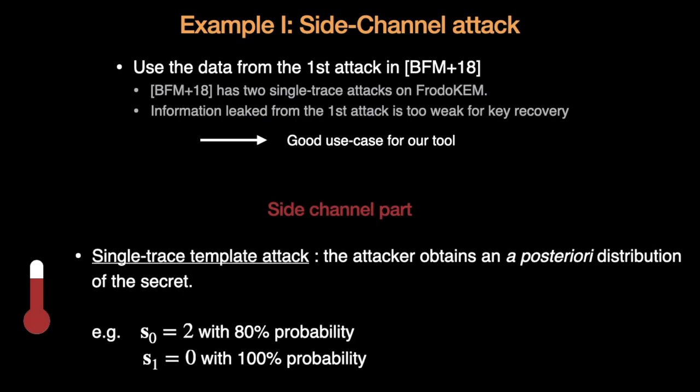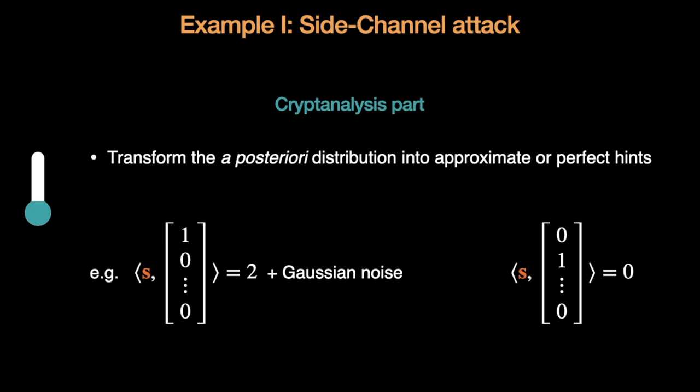The side channel is a single-trace template attack. The attacker obtains an a-posterior distribution of the secret. For example, he recovers S0 equals 2 with 80% probability, and S1 equals 0 with 100% probability, and so on for the other coefficients. Even if the probability is very high, it is very expensive to recover the secret key with brute force. However, this information can be transformed into approximate and perfect hints. For the approximate hint, we derive a center and a standard deviation of the a-posterior distribution.